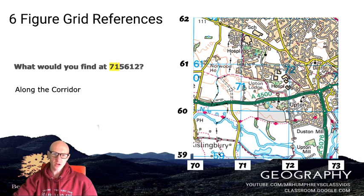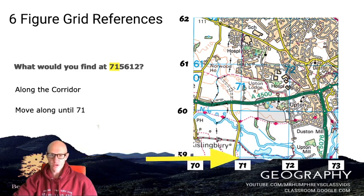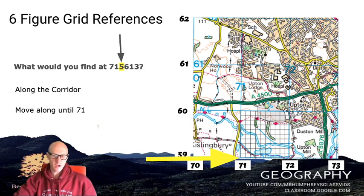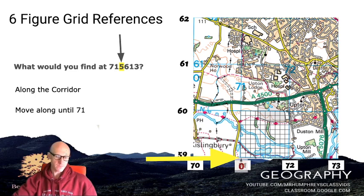To do this, we go along the corridor. We use the numbers on the map and go along the numbers at the bottom until we get to the number 71. Next, we take the number five and imagine that the square in the bottom left-hand corner of 71 splits into 10 boxes along the bottom and up the sides. We then go along one, two, three, four, five — so we're now halfway across the box. That gives us the first three numbers of our grid reference: 715.